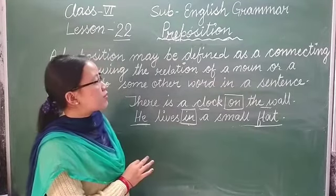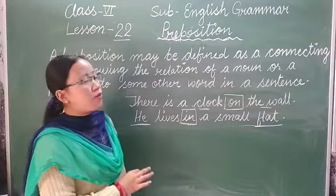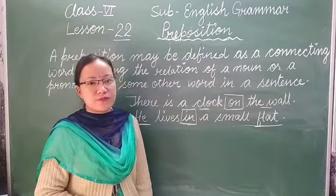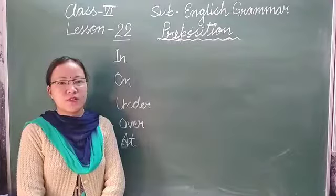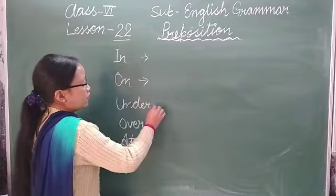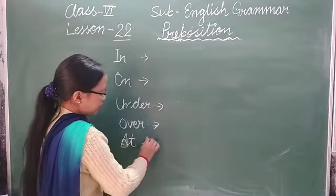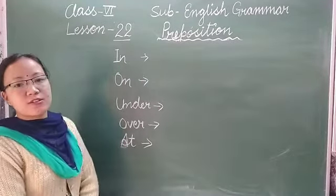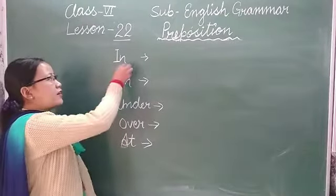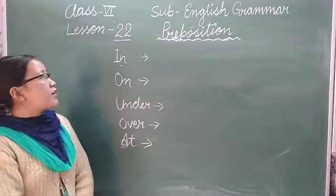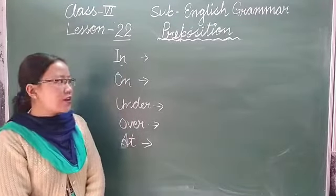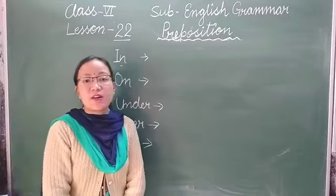I hope you understood it well. Now we are discussing different kinds of prepositions and how each is used. First is 'in'. Generally, 'in' is used for something that is inside or enclosed. For example: 'He is playing in the ground' — when the ground is covered on all sides.